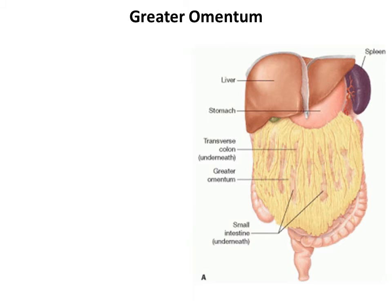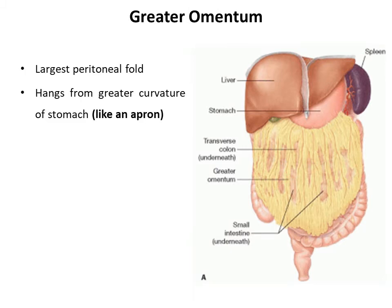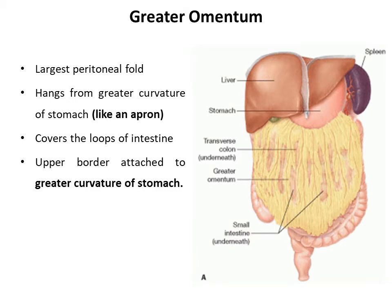The greater omentum — 'omentum' in Latin means 'like an apron' — is the largest peritoneal fold which hangs from the greater curvature of the stomach just like an apron, hence the name. It covers the loops of intestine which lie underneath it. It is made up of four borders: the upper border is attached to the greater curvature of the stomach, while the other three borders — right, left, and lower — are free.